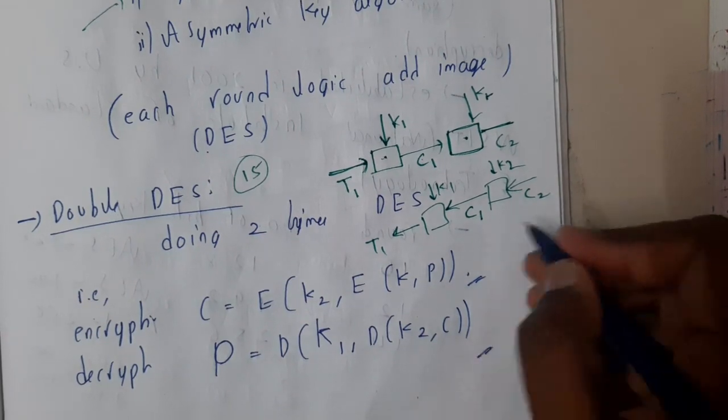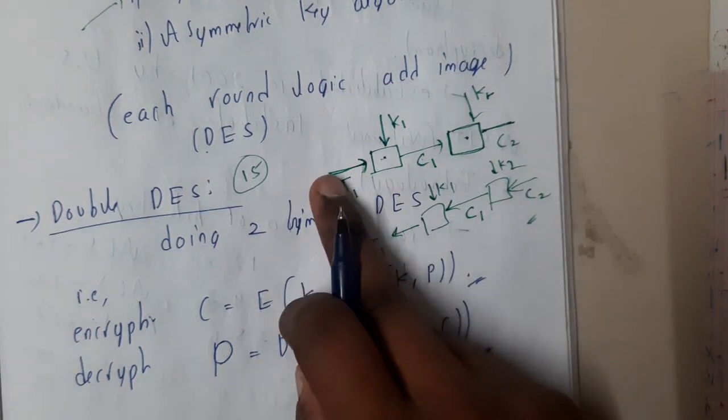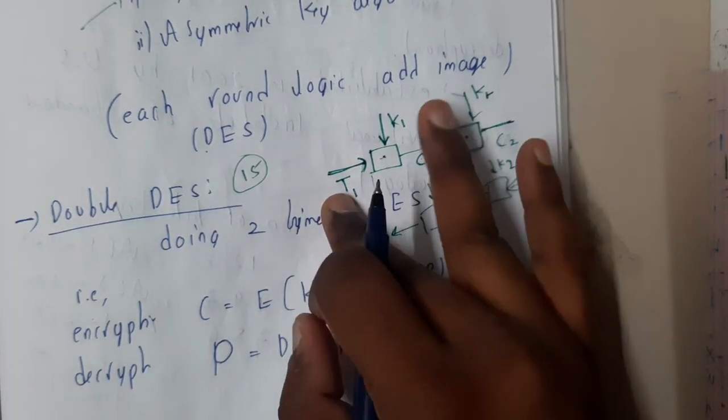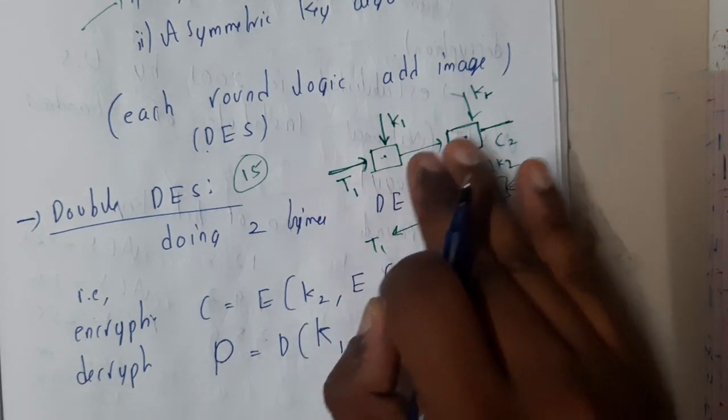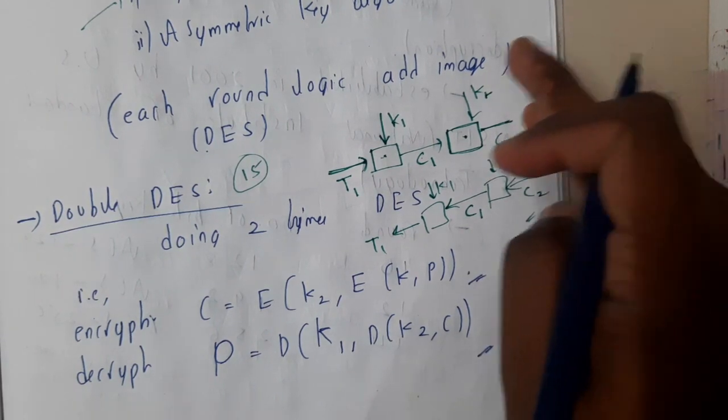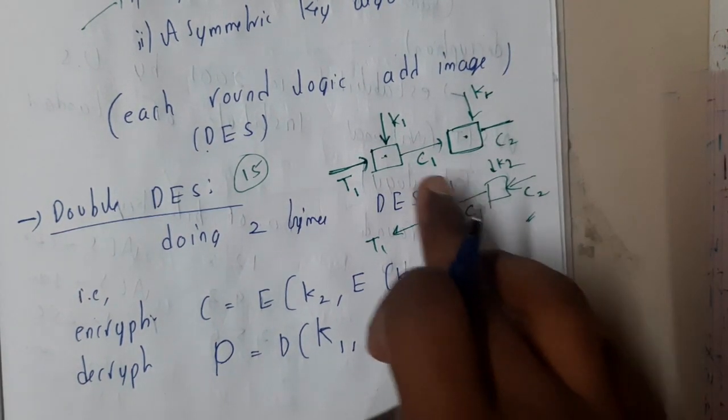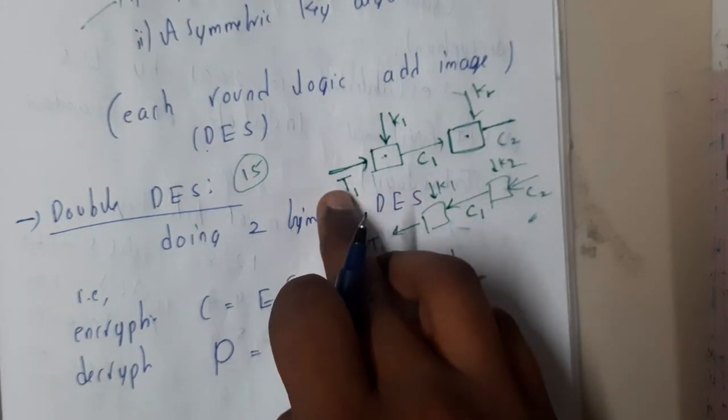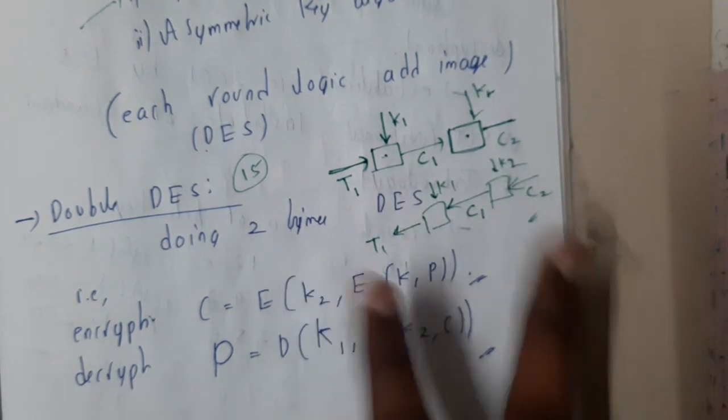Exactly in this way it will be working. Initially you will be taking your message with the key, you will be getting the cipher text 1. Cipher text with the key 2 you will be getting the cipher text 2. Cipher text 2 with the key 2 you will be getting the cipher text 1. Cipher text 1 with key 1 you will be getting T1.